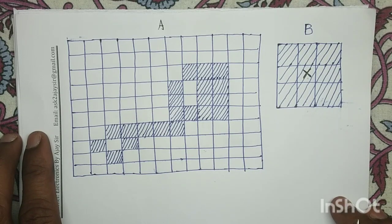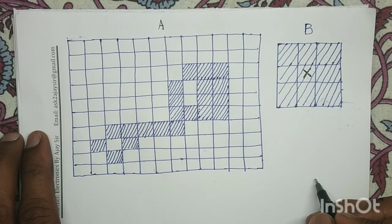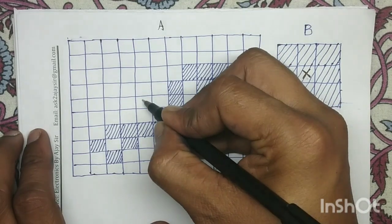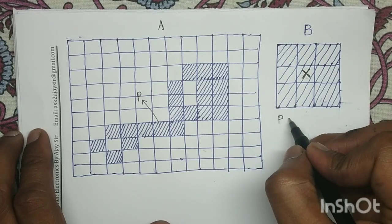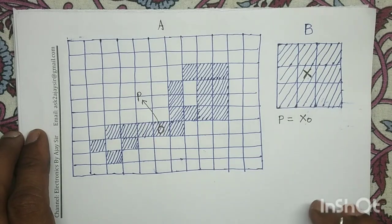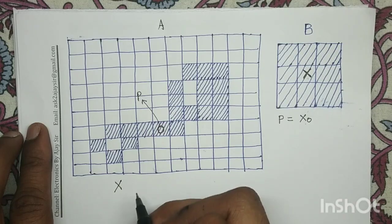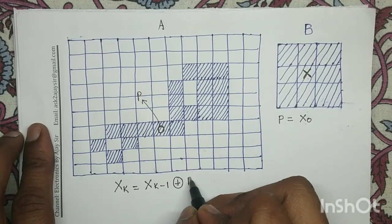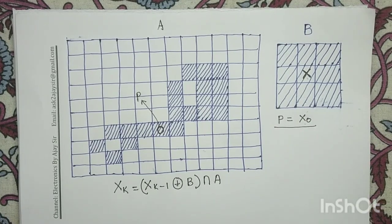This is our input image A. The algorithm starts by considering a pixel P in this given connected component set. Let us assume this is my initial point P. At the 0th iteration, we consider this particular pixel P and mark it as x_0, representing it in the image with indexing number 0. The algorithm then applies: x_k = x_(k-1) dilated with structuring element B, intersected with the original image A.